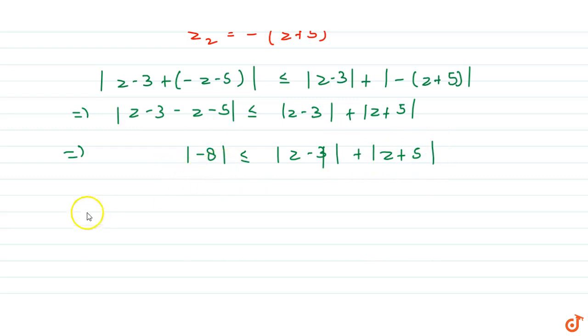Now, mod of minus 8 is 8. So, we get mod of z minus 3 plus mod of z plus 5 is greater than or equals to 8.